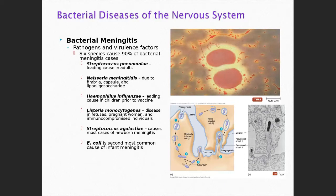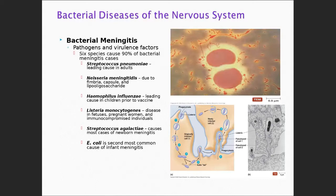Streptococcus agalactiae — group B streptococcus — is found in about 40 percent of women's vaginas and can be transferred to a newborn coming out of the birth canal, which can lead to all kinds of problems, specifically meningitis.